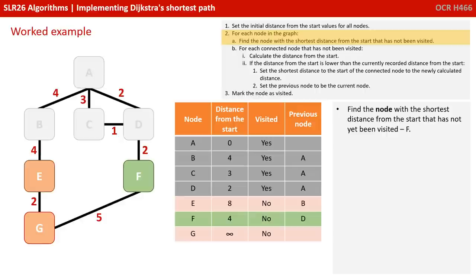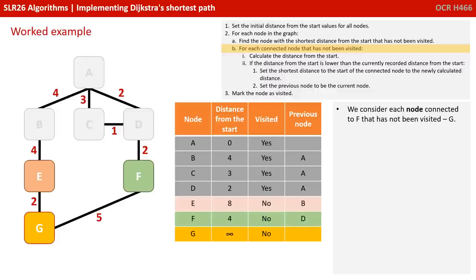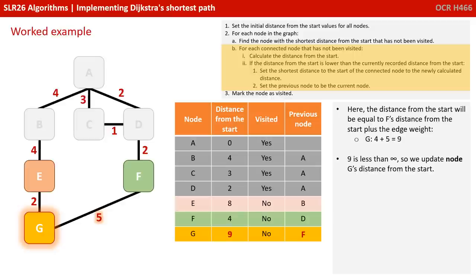We find the node with the shortest distance from the start that has not been visited — that's F with 4. We consider each node connected to F that hasn't been visited — just G. G's distance from start is F's distance of 4 plus the edge of 5, so 4 plus 5 is 9. 9 is less than infinity, so we update G's distance from start to 9 and note that we came from F. We're now done with node F, so we mark it as visited.